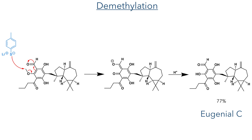With this complete, the final step was demethylation using lithium thiocresolate. This acts as a nucleophile towards the methoxy ether, eliminating the phenoxide, which is stabilised by the two electron-withdrawing carbonyl groups in the ortho positions. Reprotonation of this molecule completed the synthesis of Eugenial C.